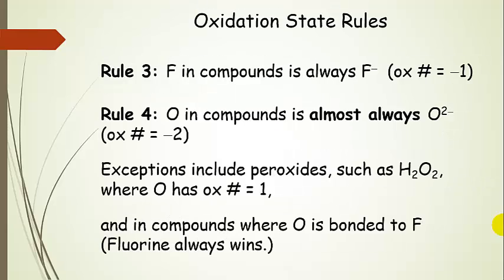Fluorine is the most electronegative element, so it always wins — it always gets the electrons. We say it has that excess electron, so its oxidation number is going to be equal to minus 1. The oxidation state of fluorine in a compound is minus 1, and that's a hard and fast rule. Rule 4 is similar — oxygen is also almost always 2 minus, the same as its charge in an ionic compound.